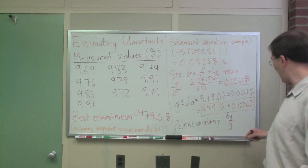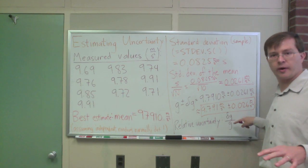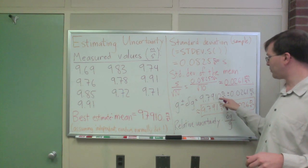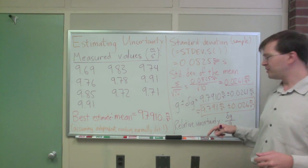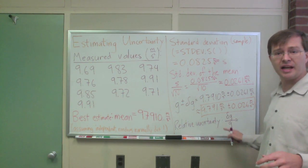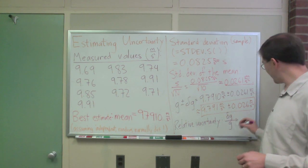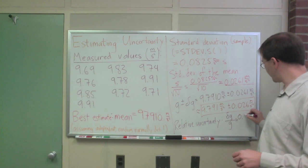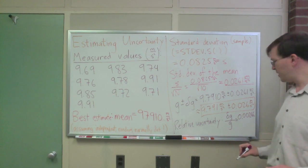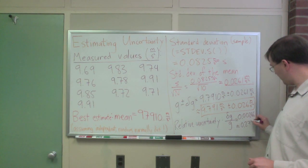I get 0.0261 meters per second squared divided by 9.791 meters per second squared. When I take that ratio, this comes out to be, it's unitless because the units cancel out in any relative uncertainty. This comes out to be about, that's almost 10, right, about 0.00266 with no units. That's my value. And I often write that as 0.27 percent.